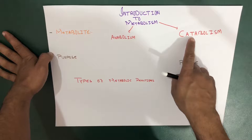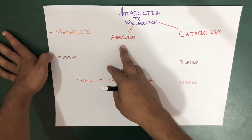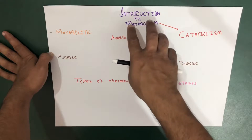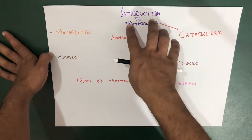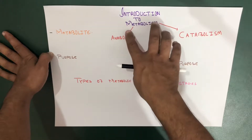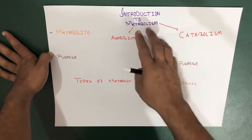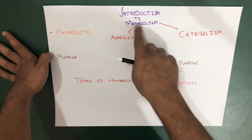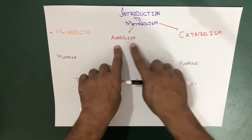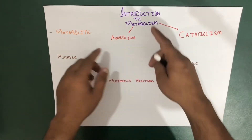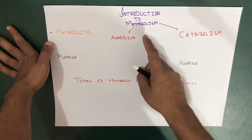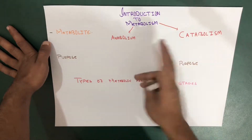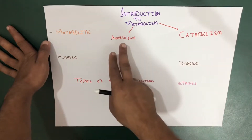So catabolism simply means breaking down, and anabolism is making up. Metabolism is actually not two separate types — both anabolism and catabolism together cause metabolism, because metabolism represents the continuous reactions occurring: something breaking down and something making up.